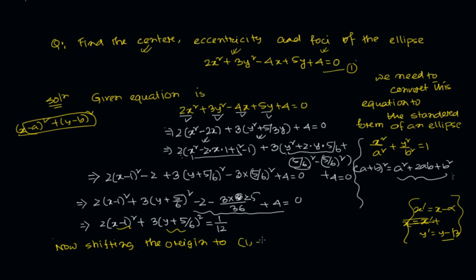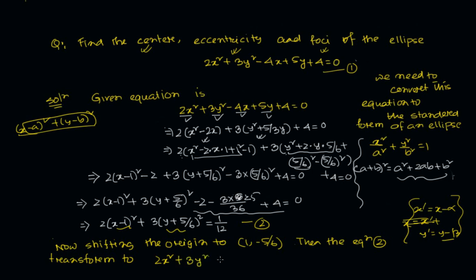We shift the origin to (1, −5/6). By doing so, the equation transforms to 2X² + 3Y² = 1/12, which is the standard form of the ellipse. Using translational transformation, we finally have 2X² + 3Y² = 1/12 as the standard form of the ellipse.